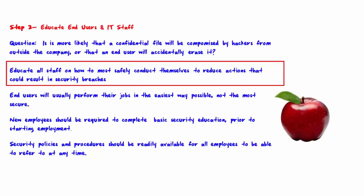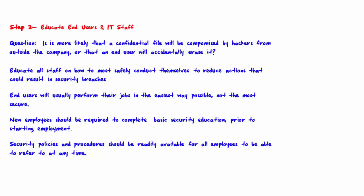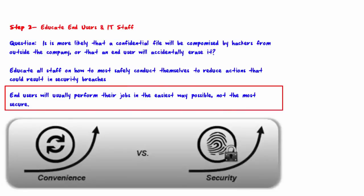No matter how good the technology used to secure the network, actions on the part of both end users and IT staff can result in security breaches. The way to reduce these problems is to educate all staff on how to most safely conduct themselves. They should be educated on the acceptable use policy, the security policy itself, and any procedures applicable to their specific job.